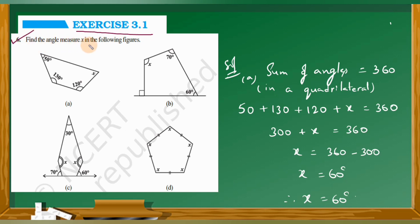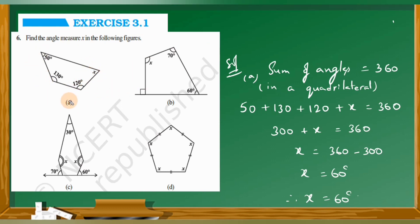Exercise 3.1, question number 6: find the angle measure x in the following figures. So here we have angles in the following figures. Let us do the first figure. You observe this figure — it is a quadrilateral. The sum of interior angles of a quadrilateral is 360 degrees.